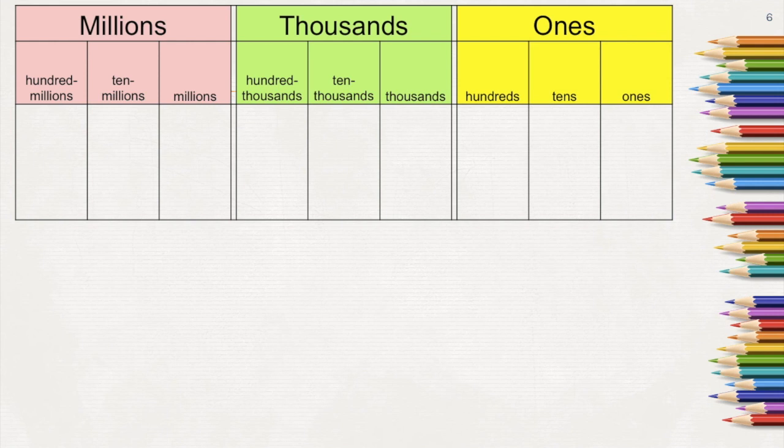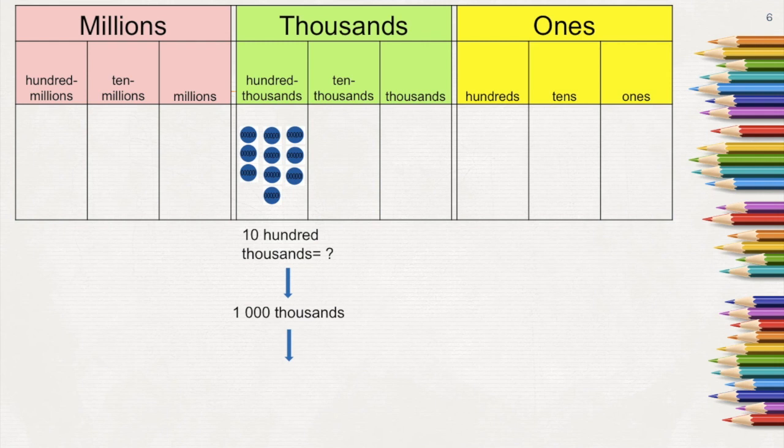This time, let's try to skip count by 100,000. Do you know the number after 900,000? If we have 10 hundred thousands, it's actually equal to 1,000,000. Therefore, the number after 900,000 is 1,000,000.